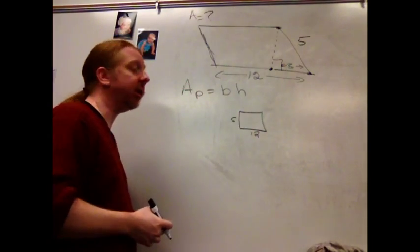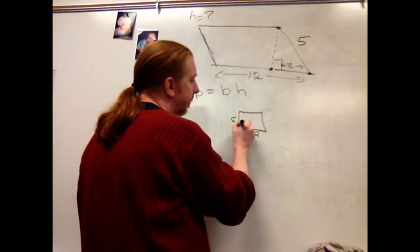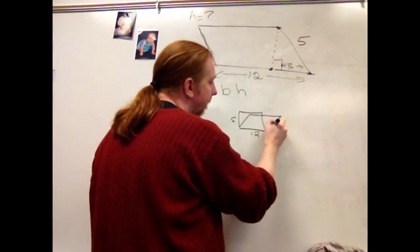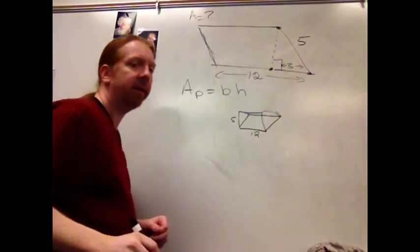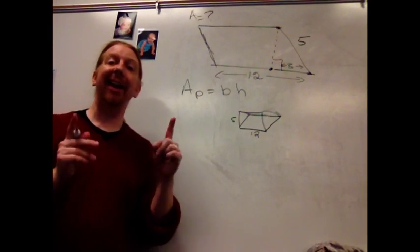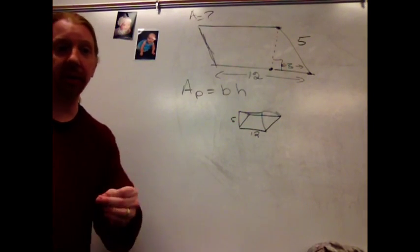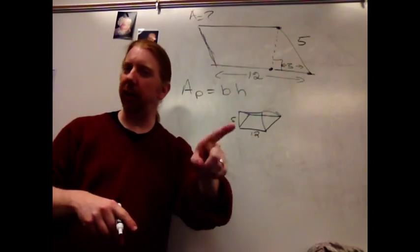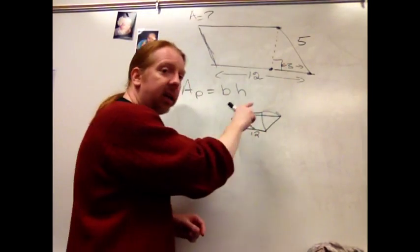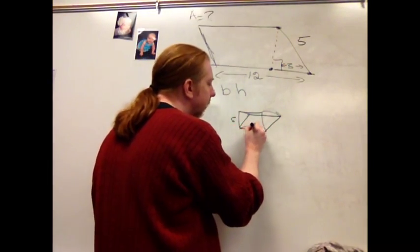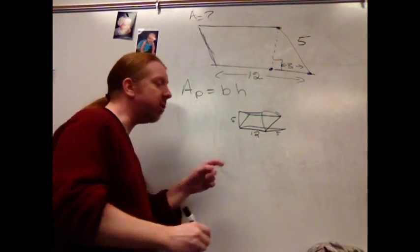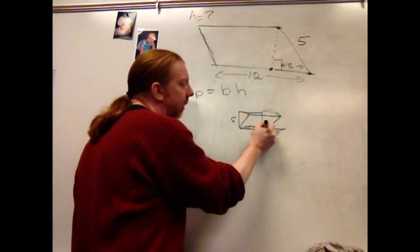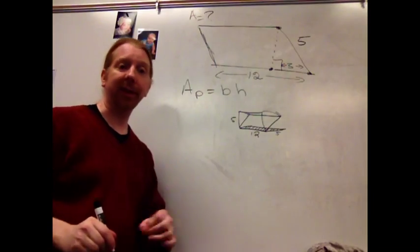That would give me the area of 60. The problem is, I've swung it over, I've kicked it to become a parallelogram, and in doing so I change its area. If you don't believe me, take the extreme version of this. If I kick it all the way down, you can see there's almost no area in this figure. It's almost perfectly flat.